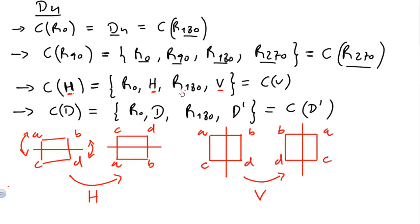All elements in that set commute with the horizontal reflection — the zero rotation, horizontal reflection, 180-degree rotation, and vertical reflection. This set is the centralizer of the horizontal reflection.